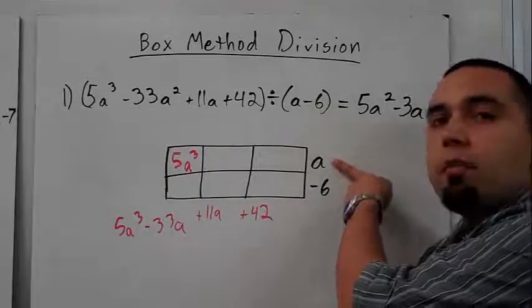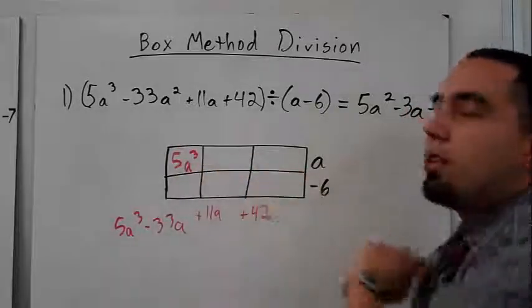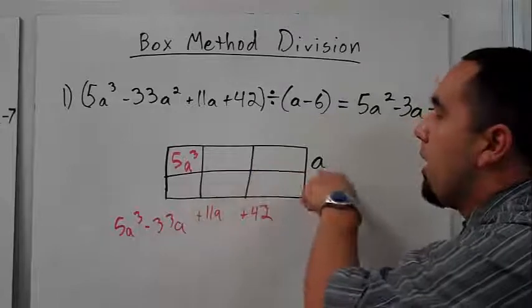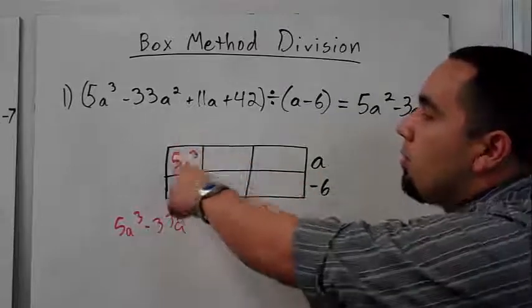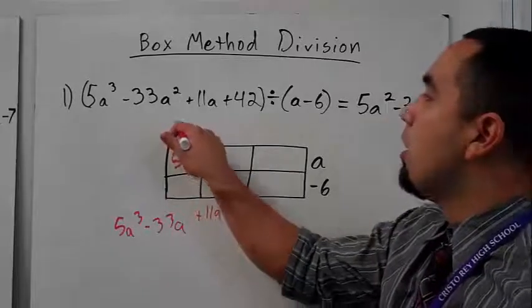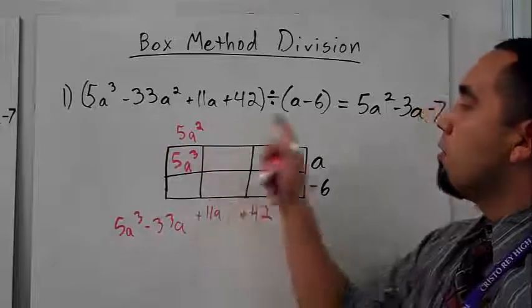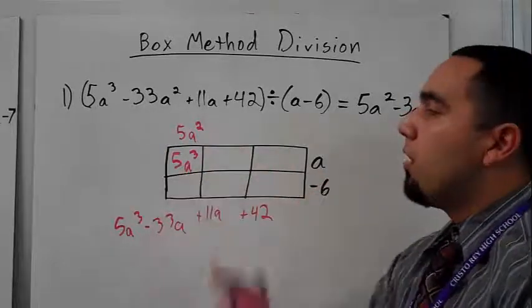And since I know that I'm dividing by this, well, I can figure out what number I get by doing the exact opposite. Logic tells me that a times some number will give me 5a cubed. And I know that number must be 5a squared, right? 5a squared times a gives me 5a cubed.